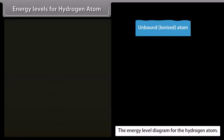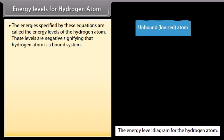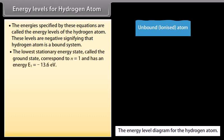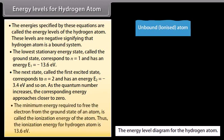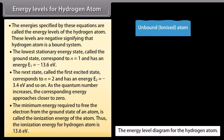The above equation can also be written as E_n = -13.6/n² electronvolt. The energies specified by these equations are called the energy levels of the hydrogen atom. These levels are negative, signifying that hydrogen atom is a bound system. The lowest stationary energy state, called the ground state, corresponds to n = 1 and has an energy E₁ = -13.6 electronvolt. The next state, called the first excited state, corresponds to n = 2 and has an energy E₂ = -3.4 electronvolt, and so on. As the quantum number increases, the corresponding energy approaches closer to zero. The minimum energy required to free the electron from the ground state of an atom is called the ionization energy of the atom. Thus the ionization energy for hydrogen atom is 13.6 electronvolt.